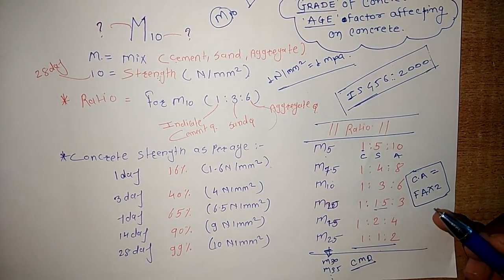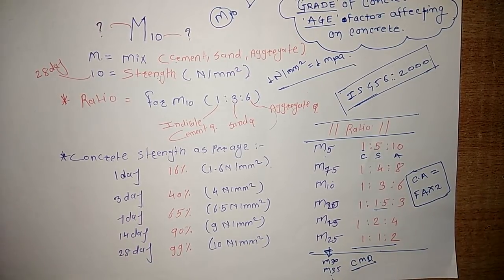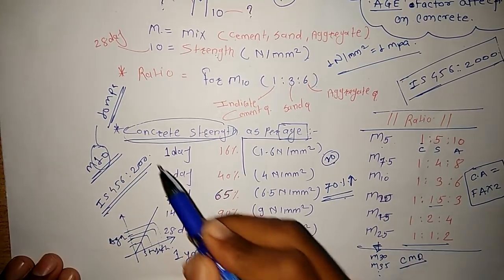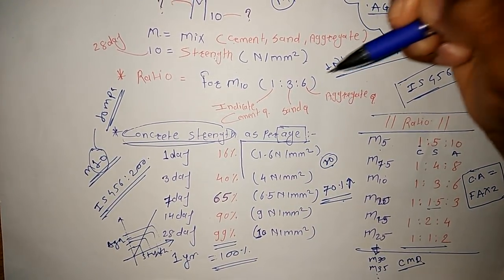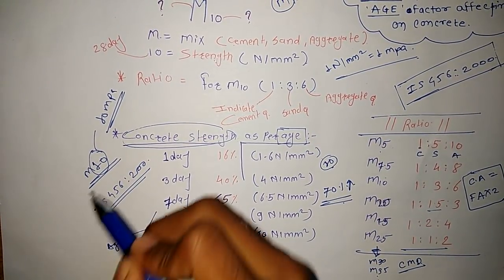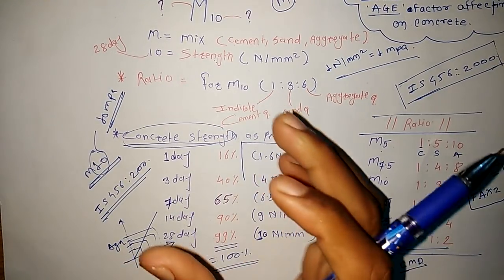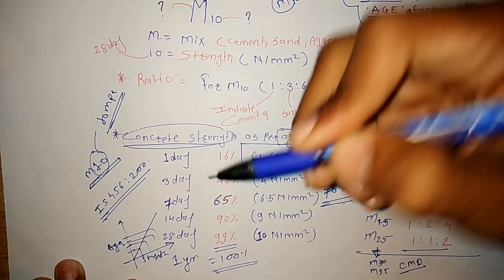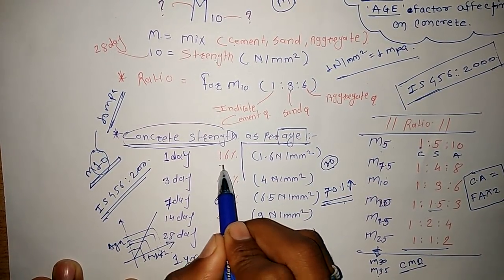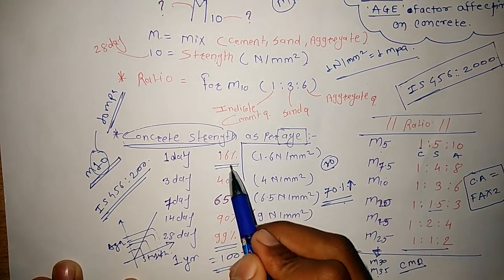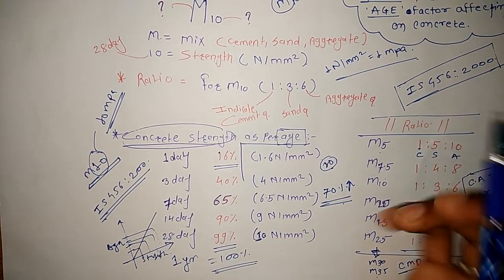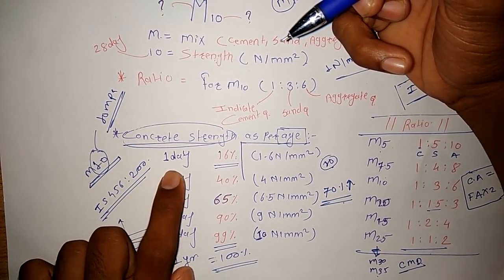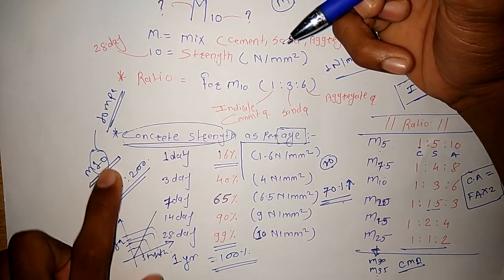These grades are asked in many competitive examinations and interviews, and are useful for site engineers and civil engineers. The second topic is concrete strength as per age — how the H factor affects concrete strength. Suppose we take M10 grade concrete and cast cubes to check compressive strength. After 24 hours, we should get a minimum of 16 percent of the total strength. If not, the concrete mixture is not proper.